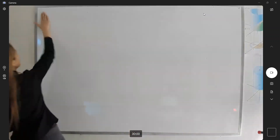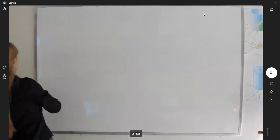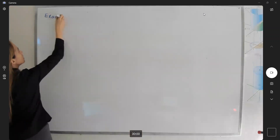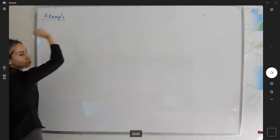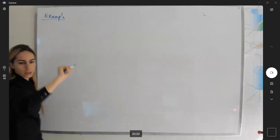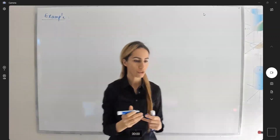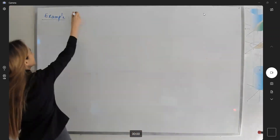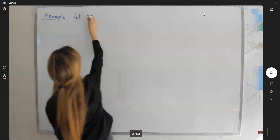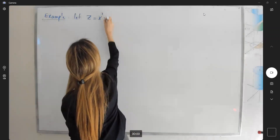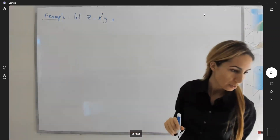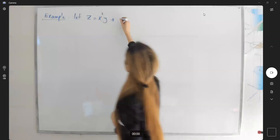I'm going to start by giving you one example. In this example, I have the following situation. I have a function z, which is x squared y. So z equals x squared y plus 3xy to the fourth.